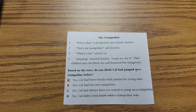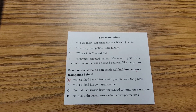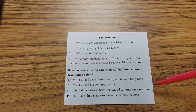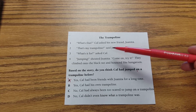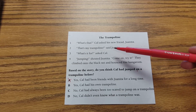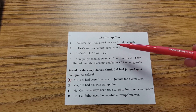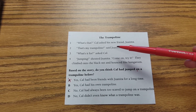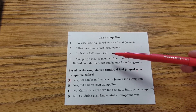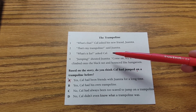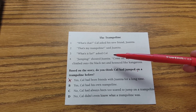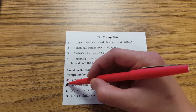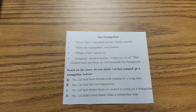Answer B: Yes, Cal had his own trampoline. Now if Cal had had his own trampoline, he would not have asked his friend Juanita 'What is it?' — he would have known exactly what it was and how to use it. Also in line three he asked 'What's it for?' So we know that B is not correct because he would have known those things.